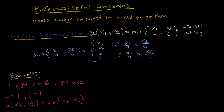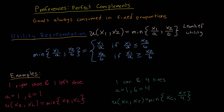Now let's go over another example. Suppose we're looking at one car and four tires — those are the fixed proportions: you're going to need four tires for every car. For the sake of this example, let's treat these as perfect complements. So a is equal to one and b is equal to four. Therefore, we can write the utility function, which depends on the quantity of cars and the quantity of tires, as the minimum between xc and xt over 4, plugging in the parameters accordingly.